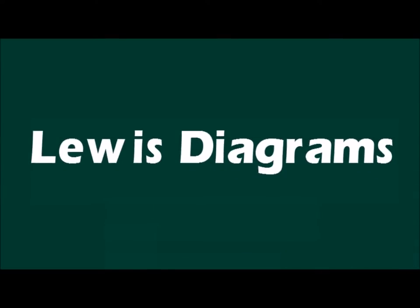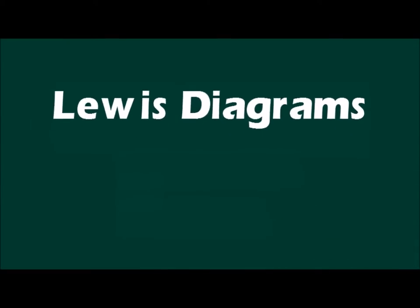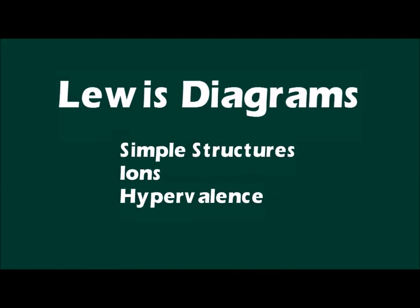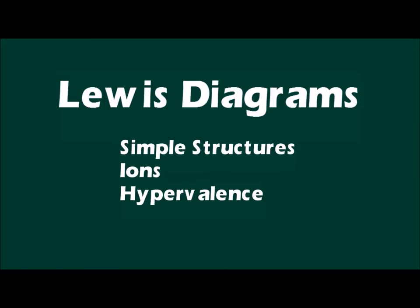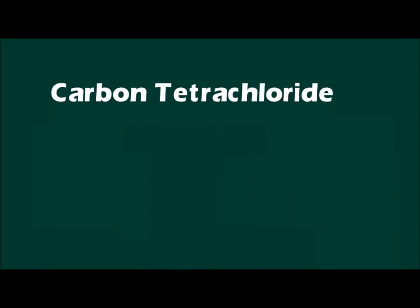This video demonstrates how to draw simple Lewis structures for molecules and ions. We're going to start with the structure for carbon tetrachloride.